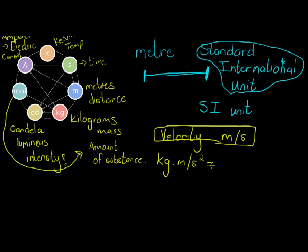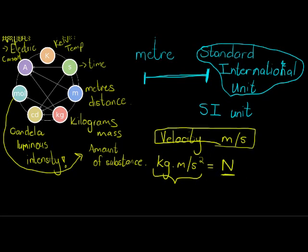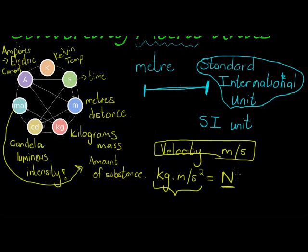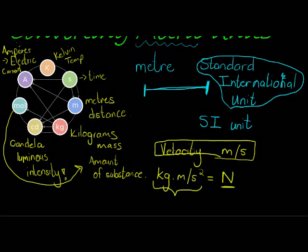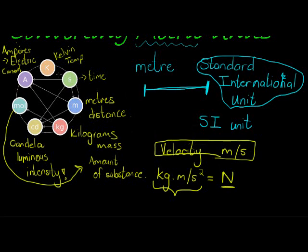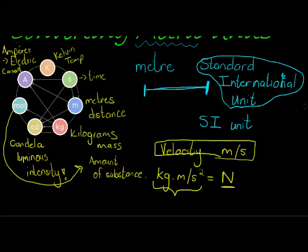Another example might be kilograms meter per second squared. This one actually has its own symbol, which we call Newtons. But that's Newtons is kilogram meters per second. So Newton is not a basic or an elementary metric unit because it can be written as a function of the other units or some other units.